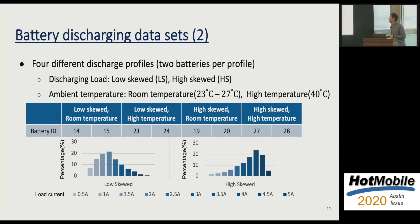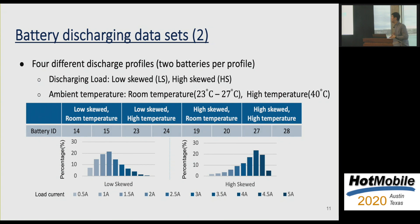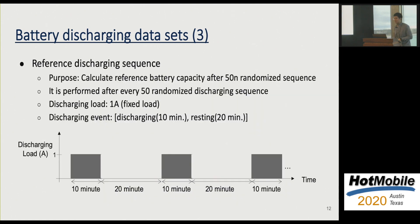For each profile, two batteries use a combination of two different temperatures and two discharging load distributions. In the low-skewed setting, the distribution is skewed toward lower current, while in the high-skewed setting, higher currents are selected with higher probability. A reference discharging sequence is also applied after every five randomized sequences to calculate the current battery capacity, using a fixed discharge load of 1A, with a 10-minute discharging period and 20-minute rest.